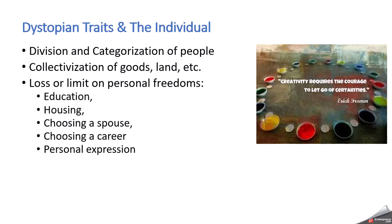There's also the loss or limit of personal freedom. Just as there's loss of freedom of speech, press, and religion, we also have other things under governmental control: how people are educated, where they live, who their spouse is going to be, what career they will have, and how they are able or not to express themselves.